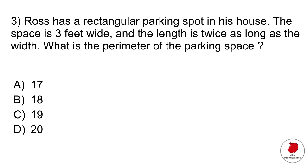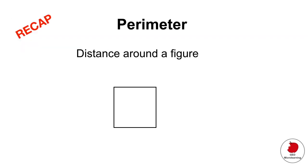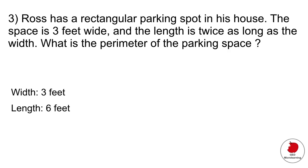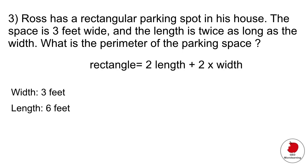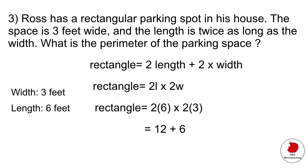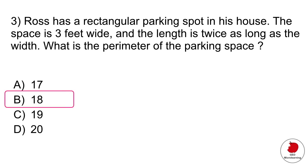The next problem is a geometry problem. Ross has a rectangular parking spot in his house. The space is three feet wide and the length is twice as long as the width. What is the perimeter of the parking space? The perimeter is the distance around a figure. The width is three feet and the length is twice that, so six feet. Using the rectangle perimeter formula — which is provided on the test — you plug your numbers in and get 18. Option B.